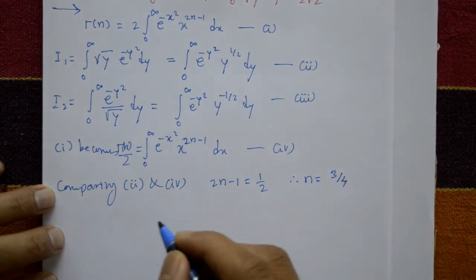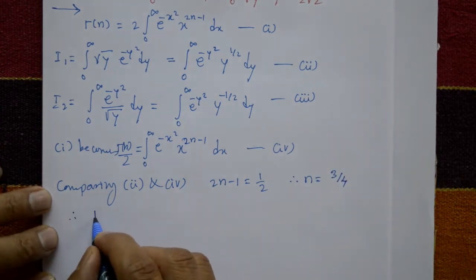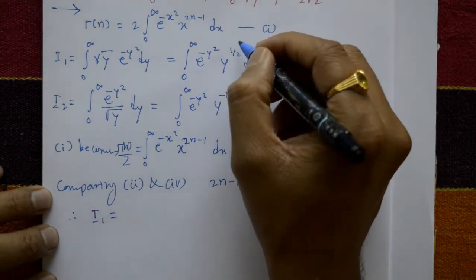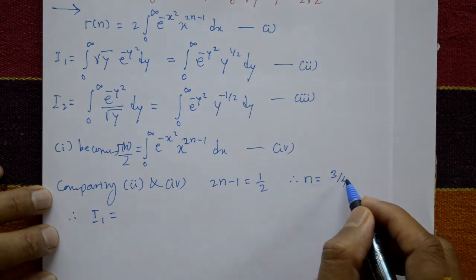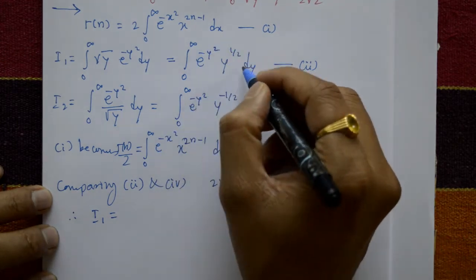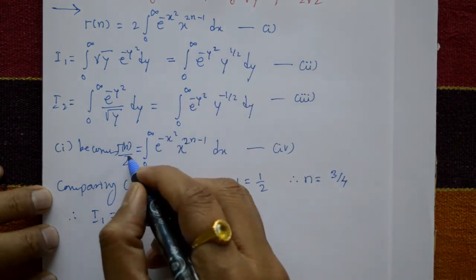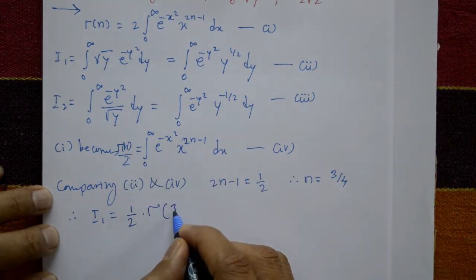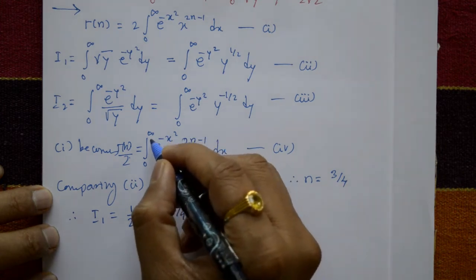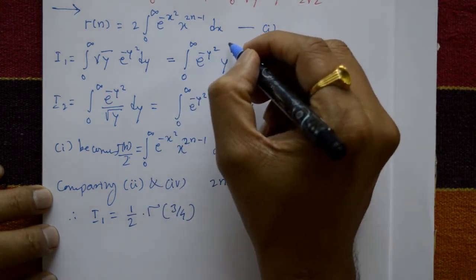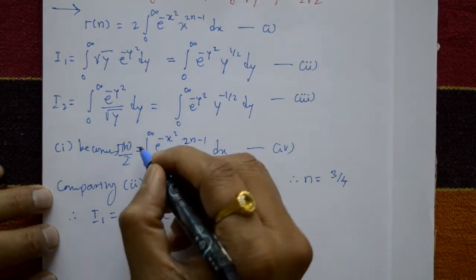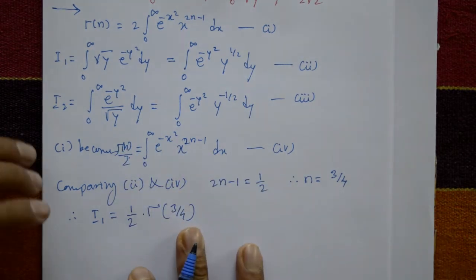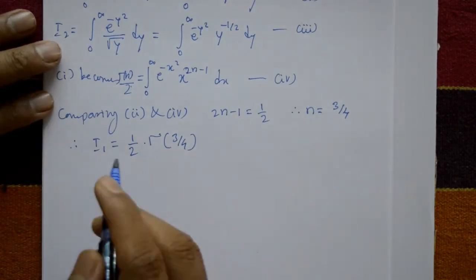Therefore I1 equals 1/2 times gamma(n), where n equals 3/4. So I1 equals 1/2 times gamma(3/4).